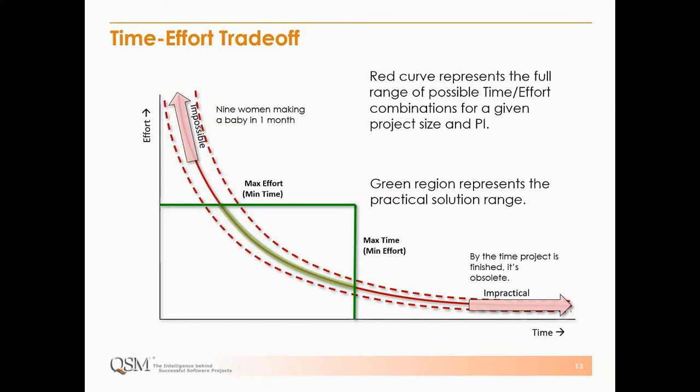Do you have any experience using Cosmic Function Points? I personally don't have much, but from what I've heard, they seem very applicable for data science work and data manipulation — they seem to fit that well. I'd be happy to get more information for you. I know of a technical paper I can share. I would encourage you to use them if you can. You can also use the QSM industry trends and you'll have a very good defensible estimate starting there.